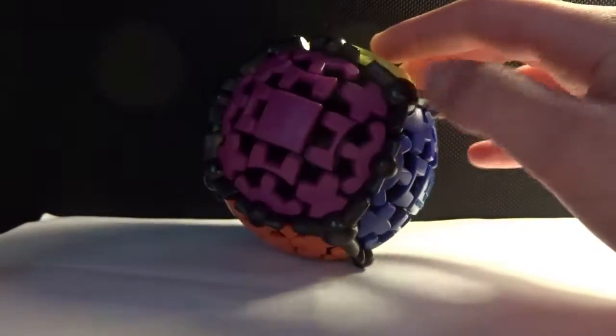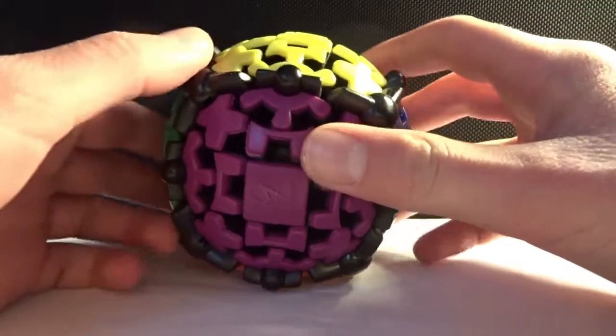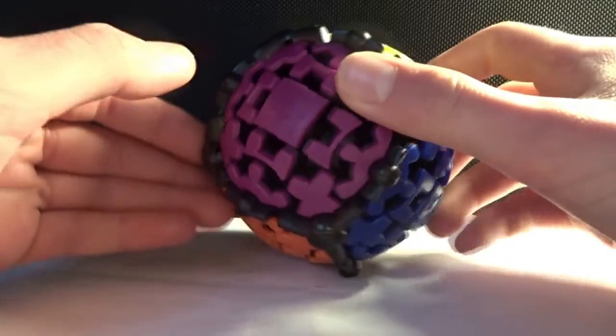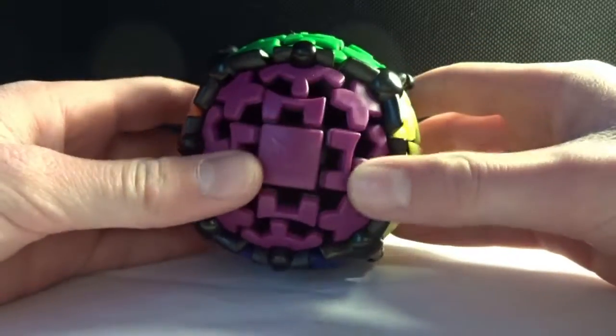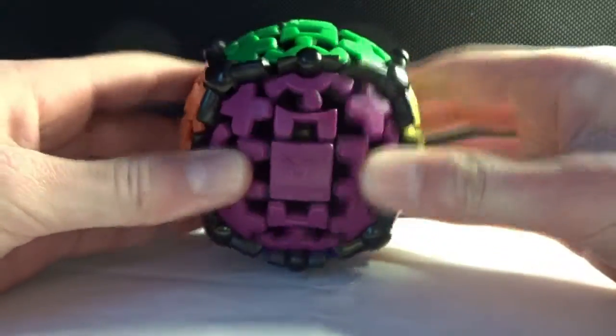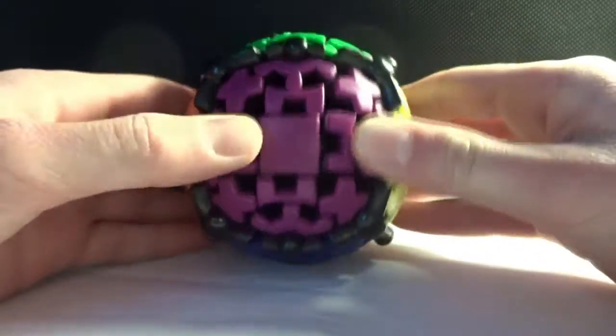There really isn't that much to say about this cube, but it's pretty much just a gearball. Pretty self-explanatory, it's made up of these small gears, and all the gears turn when you turn it, or at least most of them.